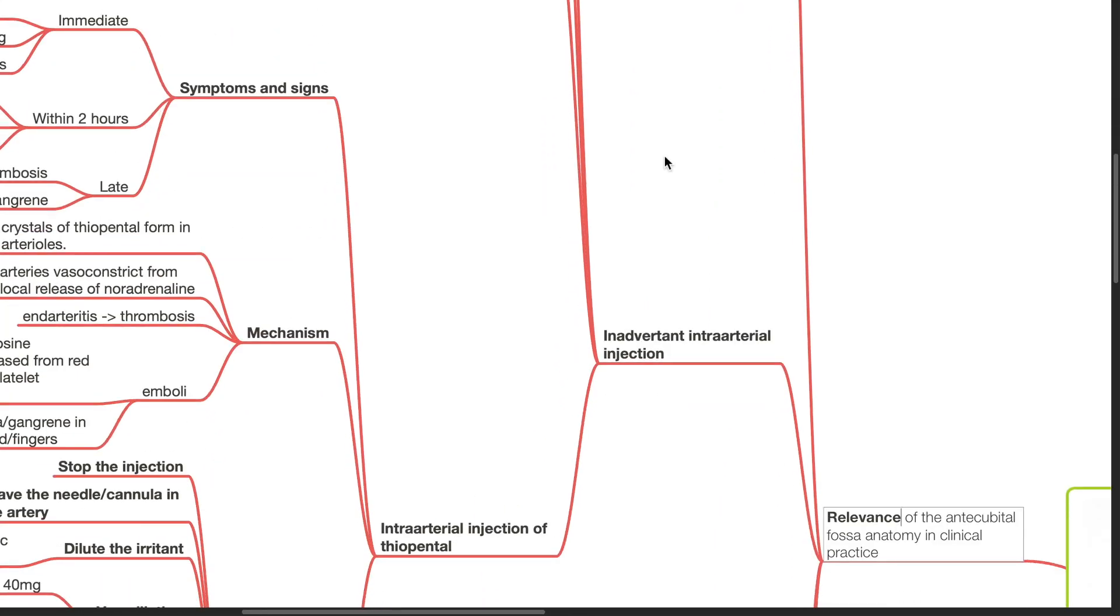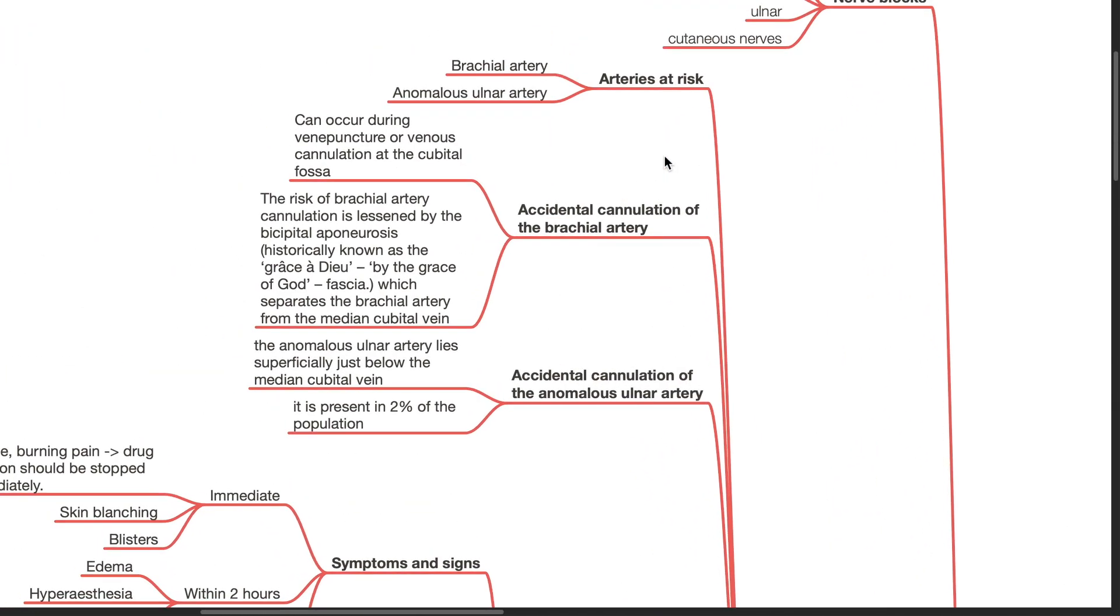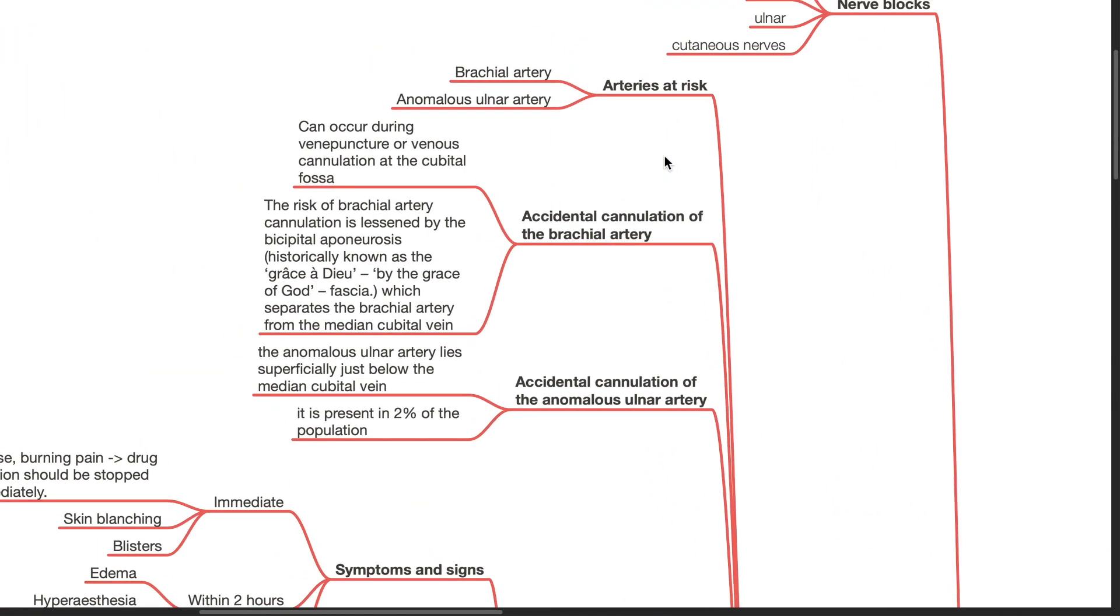Inadvertent intra-arterial injection. Arteries at risk include the brachial artery and the anomalous ulnar artery. Accidental cannulation of the brachial artery can occur during venipuncture or venous cannulation at the cubital fossa. The risk of brachial artery cannulation is lessened by the bicipital aponeurosis, also known as the grace of God fascia, which separates the brachial artery from the median cubital vein. Accidental cannulation of the anomalous ulnar artery can occur as it lies superficially just below the median cubital vein. It is present in 2% of the population.